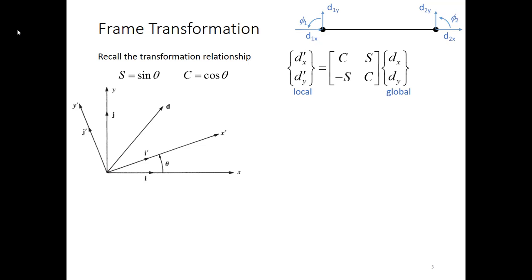Previously we developed a relationship between the components of the d vector in the local primed coordinate system to the global unprimed coordinate system. And that's as shown here, where c represents the cosine of the angle theta. Theta is the angle measured from the global to the local coordinate system. From and to is important there because if we get a negative sign for theta, we need to keep that in mind.